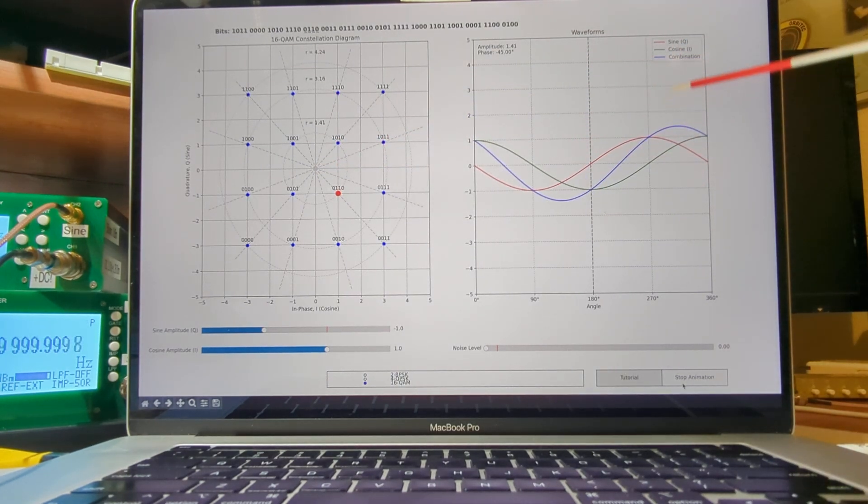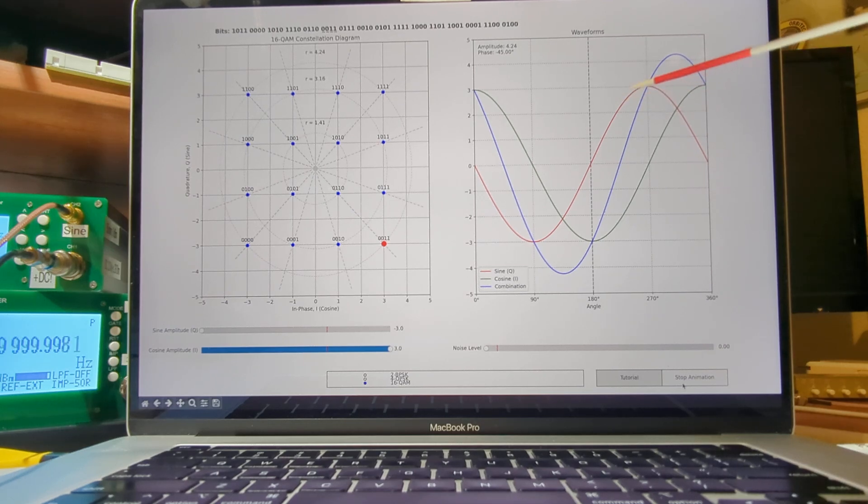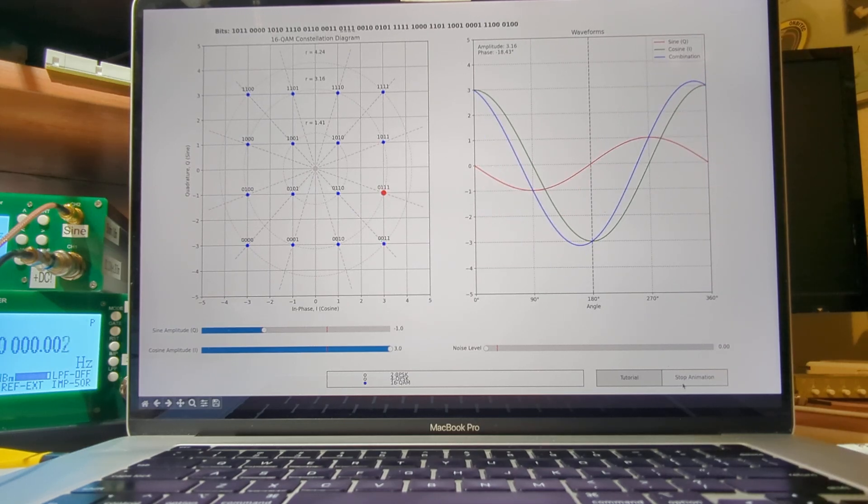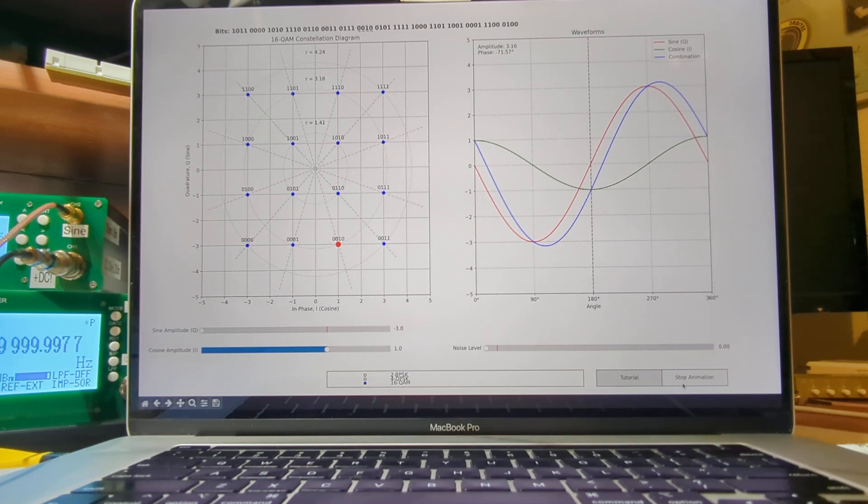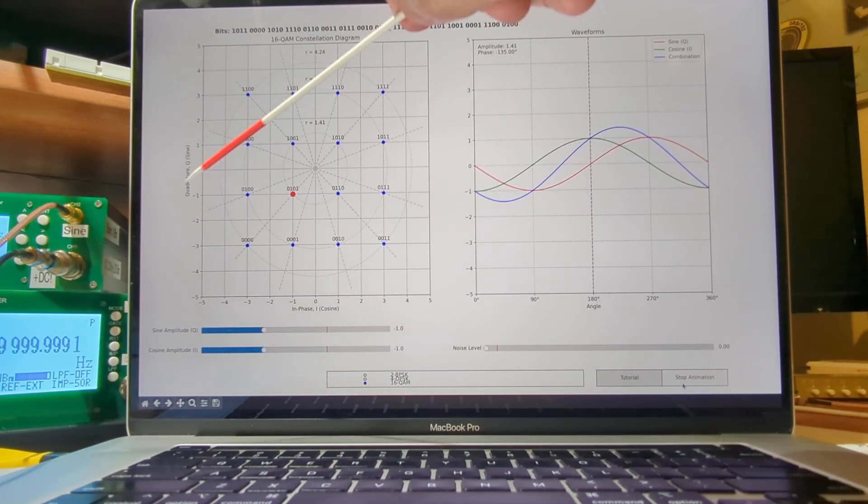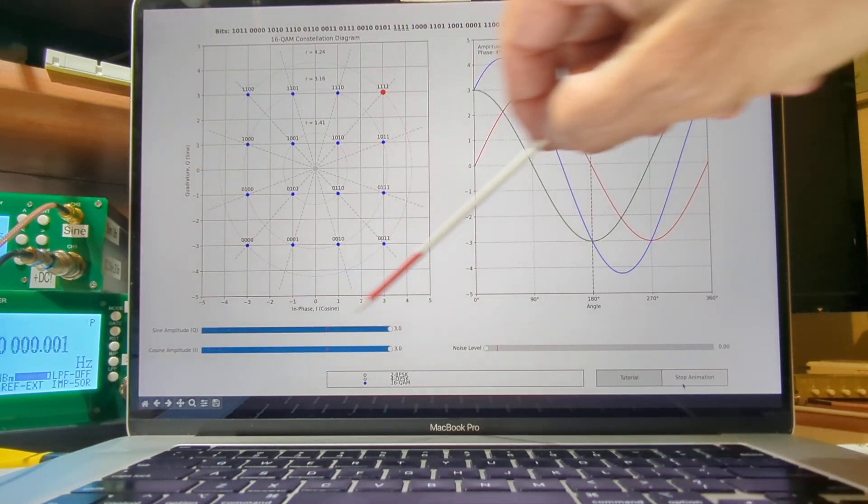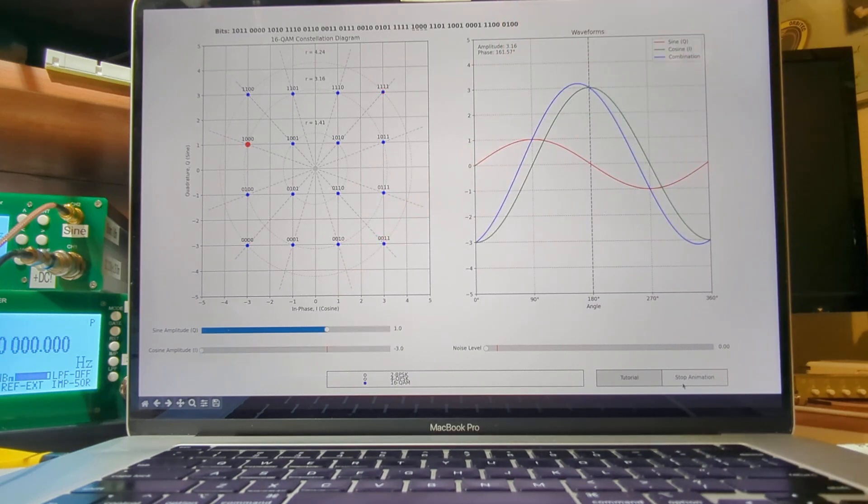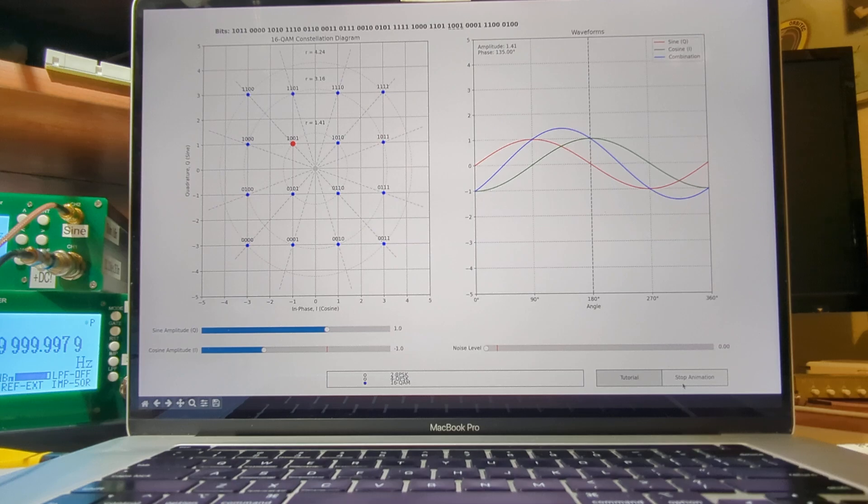On the right, we're showing the time domain representation of the waveform that would be transmitted. And what we're doing is we're combining what's called the Quadrature Waveform, which is a sine wave, with the in-phase waveform, which is a cosine. A sine and a cosine waveform are naturally 90 degrees out of phase. That's where the term Quadrature comes from.